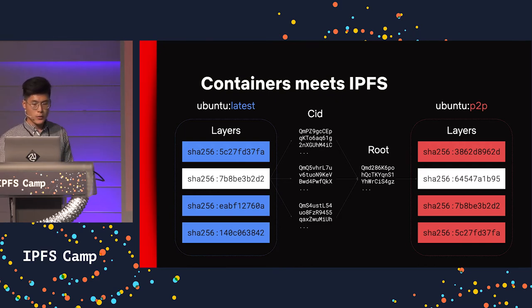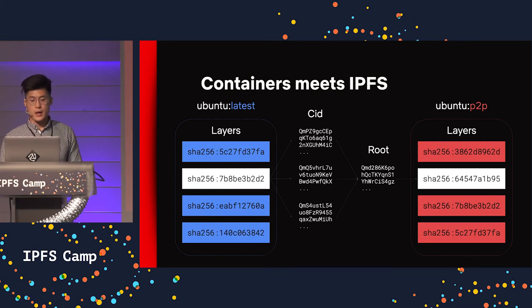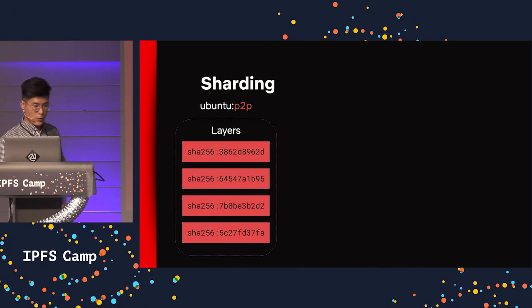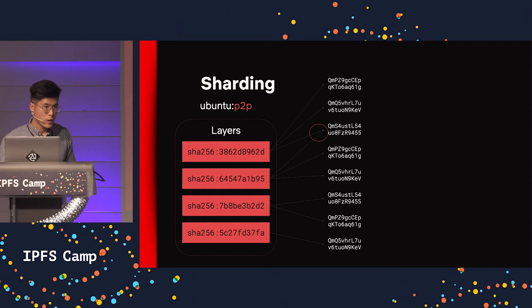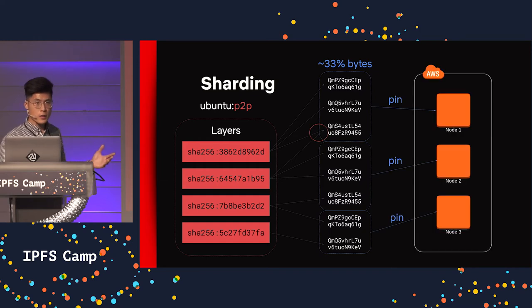To demonstrate how this works, I'm going to shard a peer-to-peer image across an EC2 cluster, and then try to download it. So for sharding, we're going to take every layer, break it down to chunks — some of which may be deduplicated — and then group them into roughly 33% of total size, and then pin them on EC2 nodes on AWS.